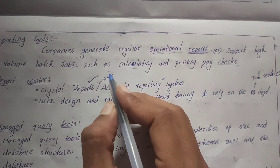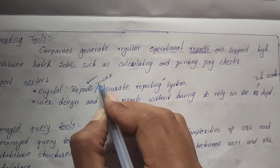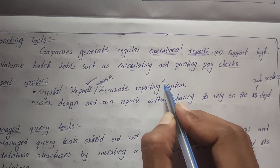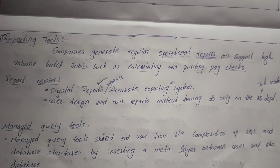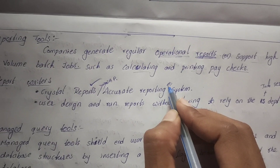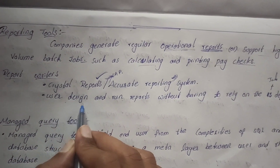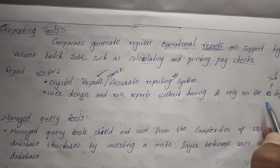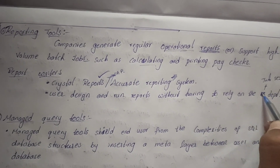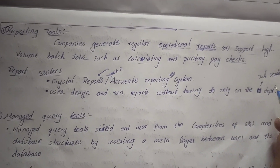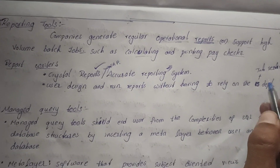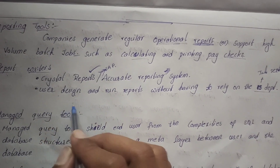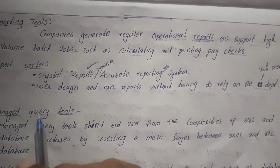Crystal Reports is a business intelligence tool developed by SAP — System Applications and Productions. Accurate reporting systems means truth or exact value reporting. Users can design and run reports without having to rely on the IS (Information Services) department.